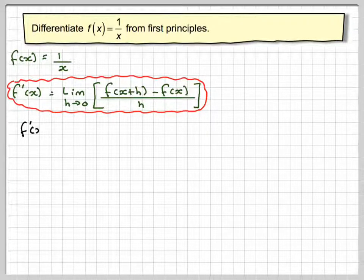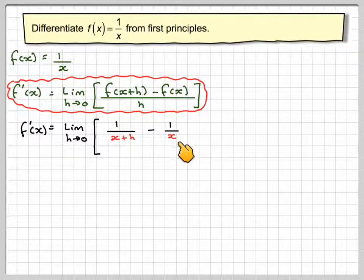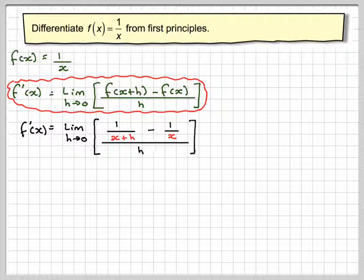So if f(x) is 1/x, then f(x+h) will become 1/(x+h) using our function notation, minus f(x) which is 1/x, all over h.